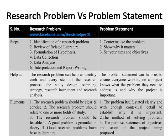The elements of a problem statement are three: Number one is the problem itself, stated clearly and with enough contextual detail to establish why it is important. Number two is the method of solving the problem. Number three is the purpose, statement of objectives, and scope of the project being proposed.